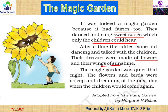The magic garden was quiet that night. The flowers and birds were asleep and dreaming of the next day when the children could come again. The whole garden was so happy when the children used to enter. It was taken from 'The Fairy Garden' written by Margaret Asmolter.